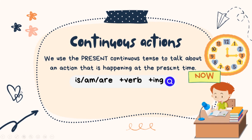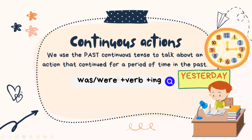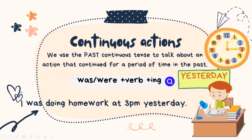We use the present continuous tense to talk about an action that is happening at the present time. For example, as you can see, I'm doing homework now. And we use the past continuous tense to talk about an action that continued for a period of time in the past. For example: I was doing homework at 3pm yesterday.